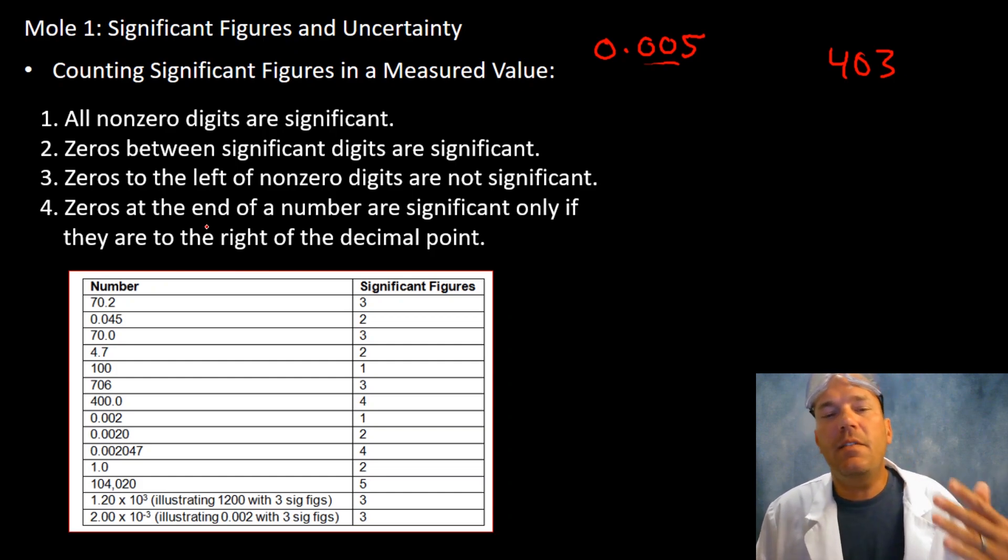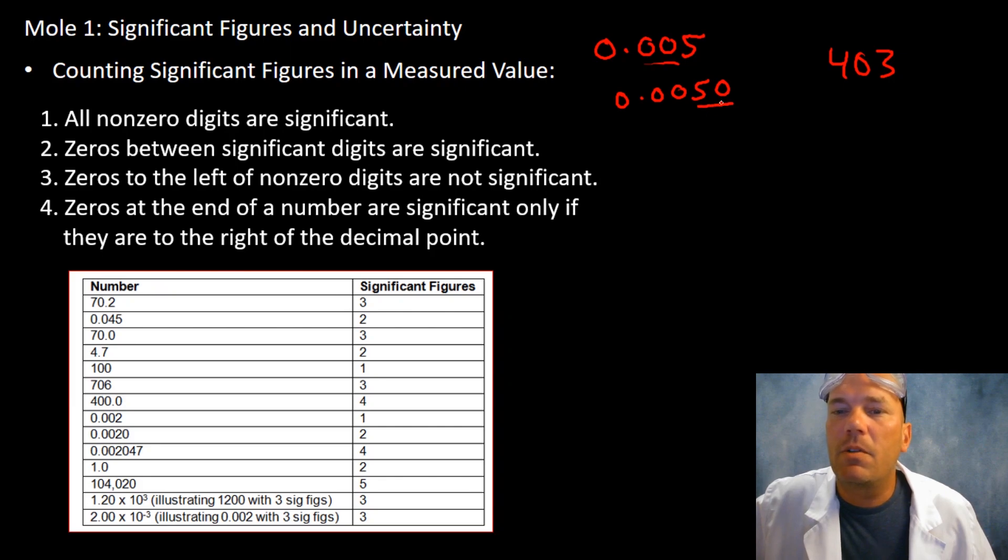Lastly, zeros at the end of a number are significant only if they are to the right of the decimal. So 0.0050, well these are placeholders but this is significant, so we would have two sig figs in this case here.